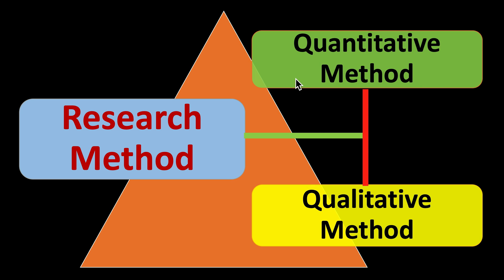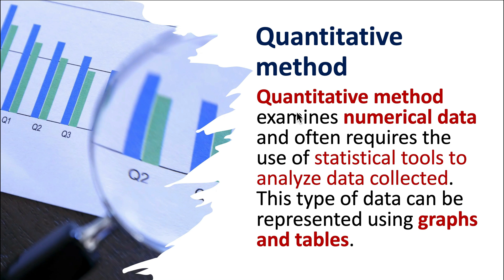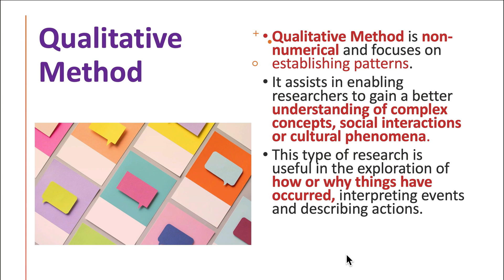Research methods are of two types: quantitative method and qualitative method. Quantitative method examines numerical data and often requires the use of statistical tools to analyze collected data. This type of data can be represented using graphs and tables.